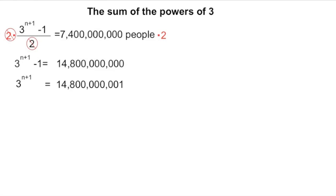All this log is doing for us is it's going to actually calculate for us what power do we raise three to to get 14.8 billion. That'll tell us what n plus one is. So we can type this into a calculator. You can Google logarithm calculator. Whatever you have to do, we find out that it's 21.32. That means three raised to the 21.32 power is 14.8 billion. So 21.32 equals n plus one, which means n equals 20.32.